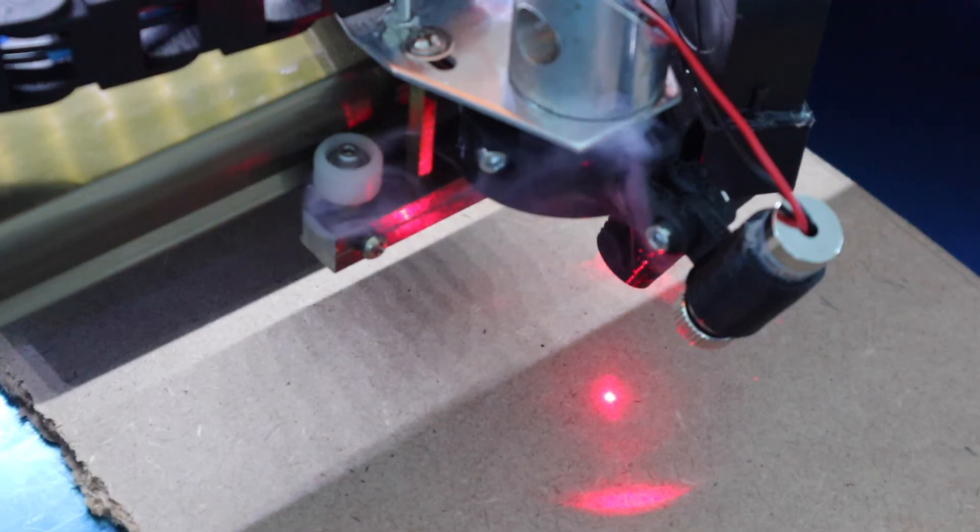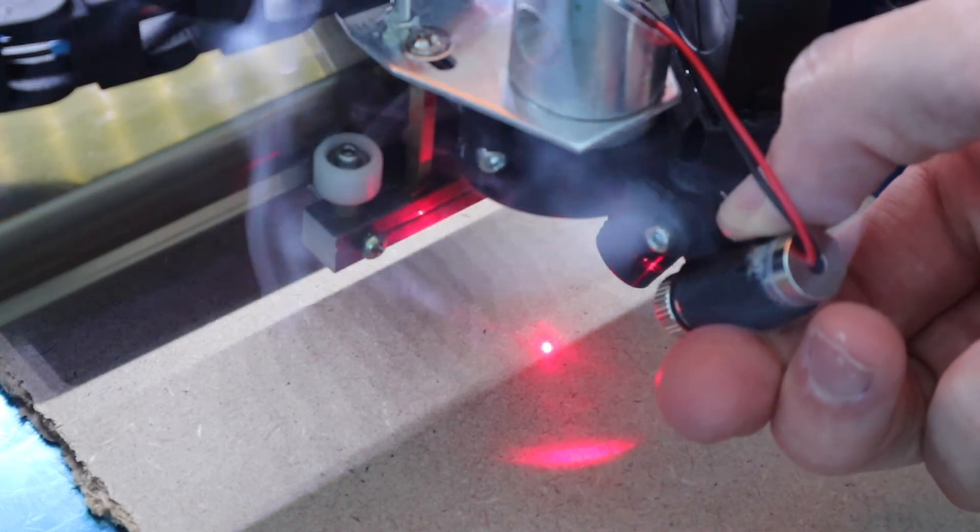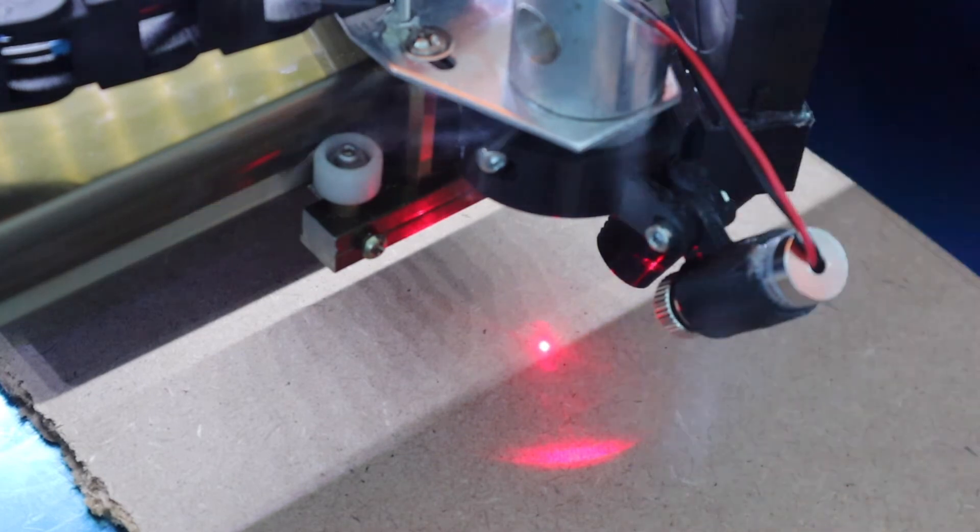Briefly turn your laser on using a low power setting in order to make a mark to adjust the pointer onto. Now tilt the pointer so that it's pointing to the mark and then secure it.